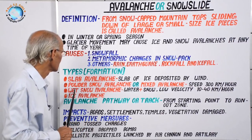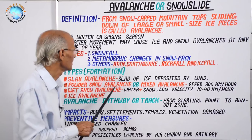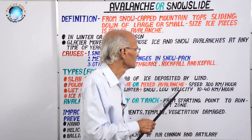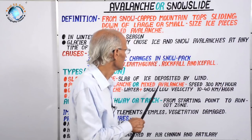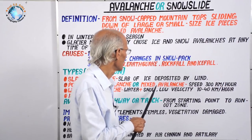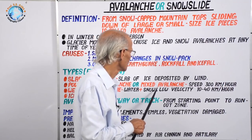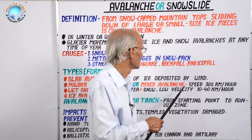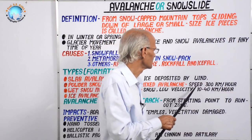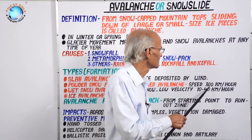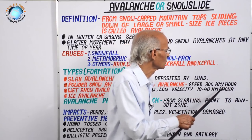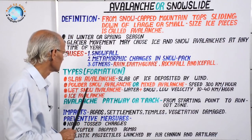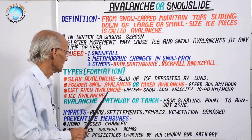The next type is powder snow avalanche, also called mixed avalanche. It results from the rapid downward movement of ice or snow and its speed is very fast, about 300 kilometers per hour.